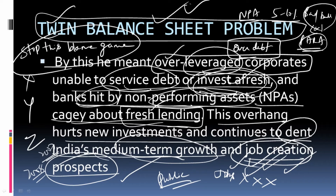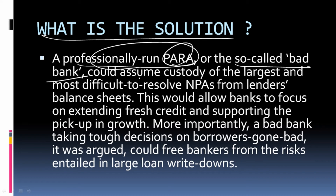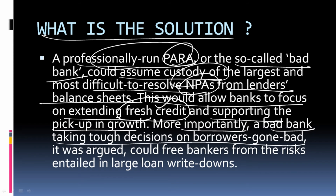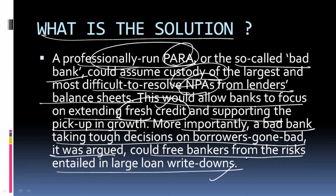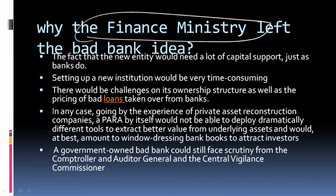The solution: a professionally run PARA — Public Sector Asset Rehabilitation Agency — or bad bank, whatever the name, would assume custody of the largest and most difficult-to-resolve NPAs from lenders' balance sheets. This allows banks to focus on extending fresh credit and supporting growth pickup. More importantly, a bad bank taking tough decisions on bad borrowers could free bankers from the risk of large loan write-offs.